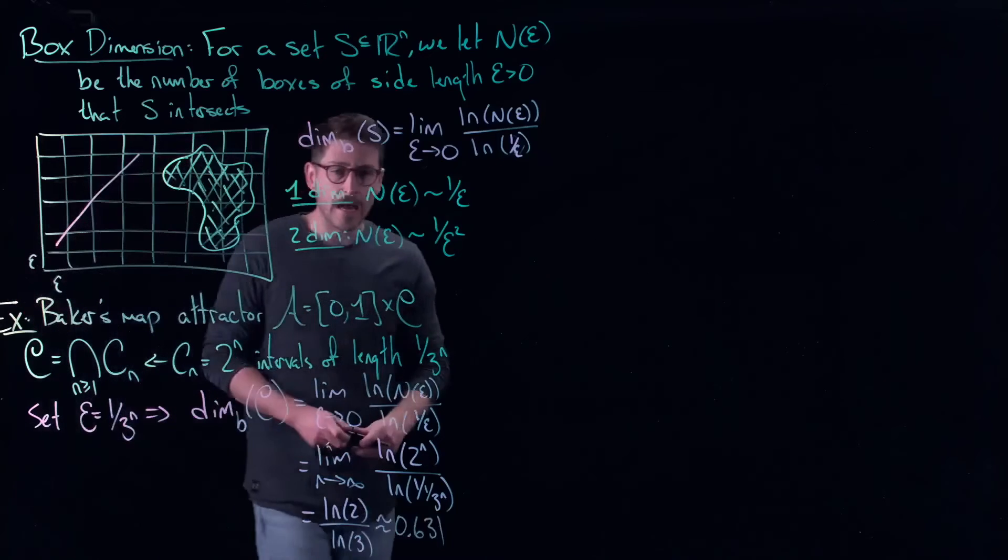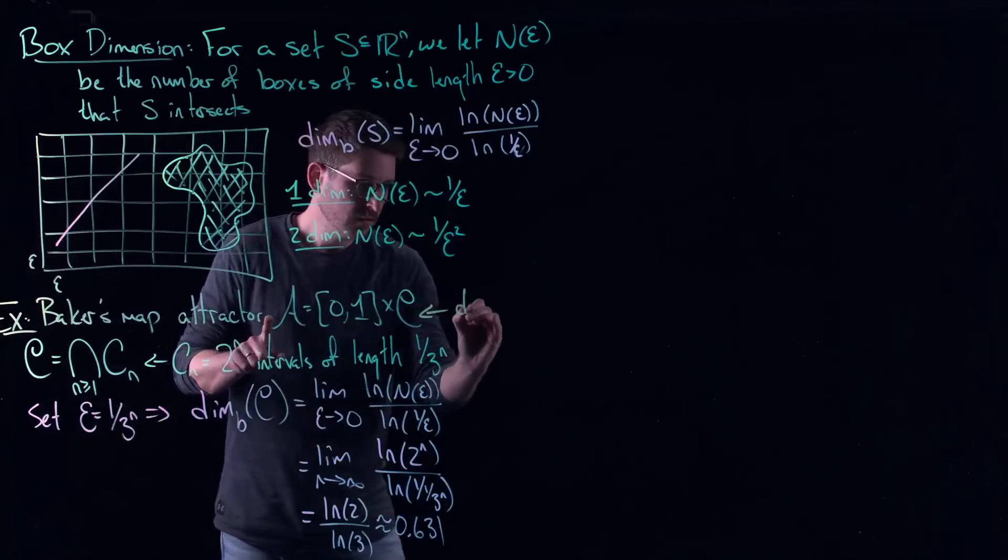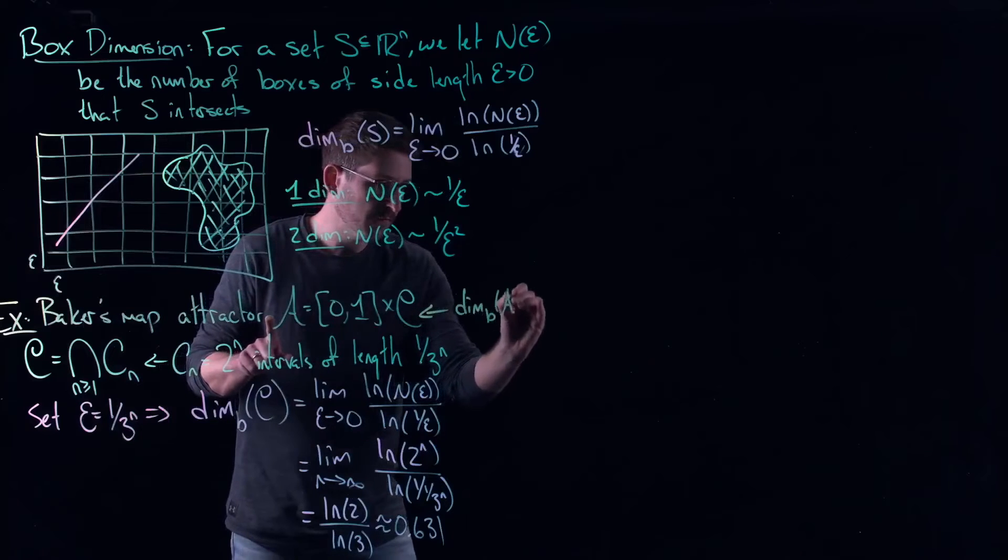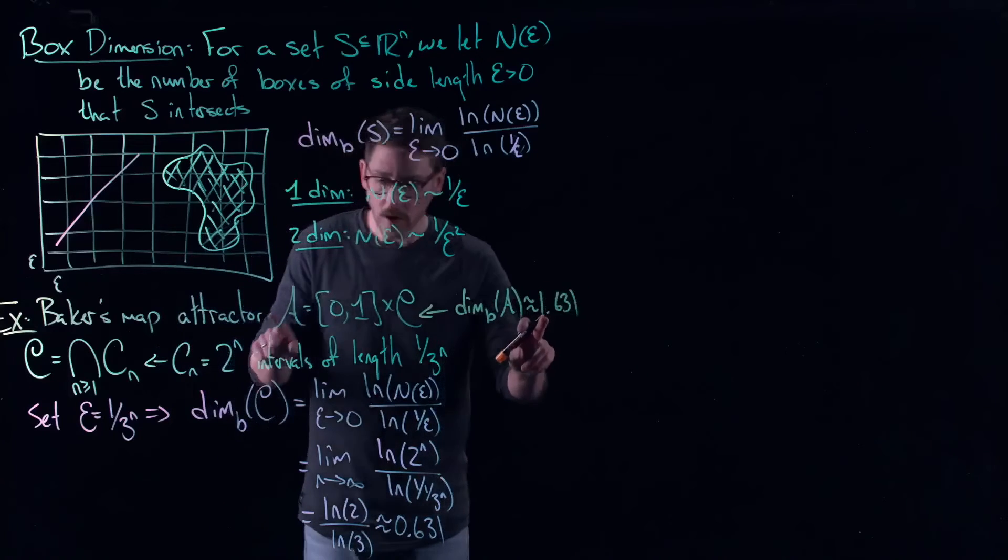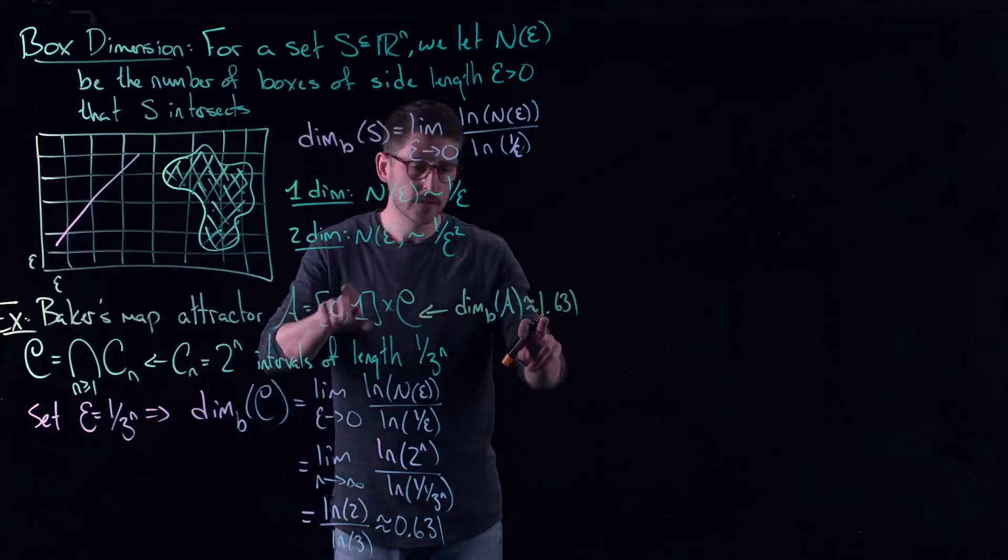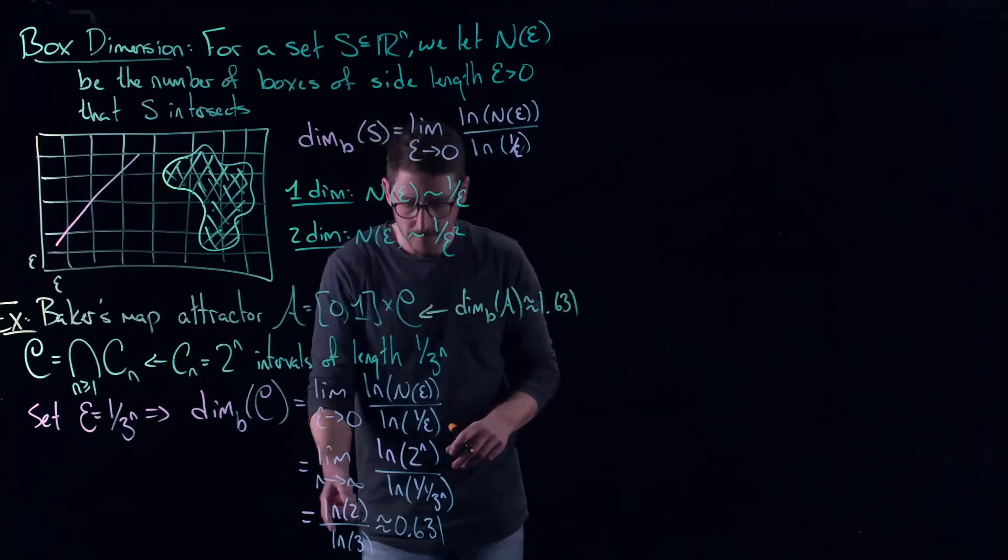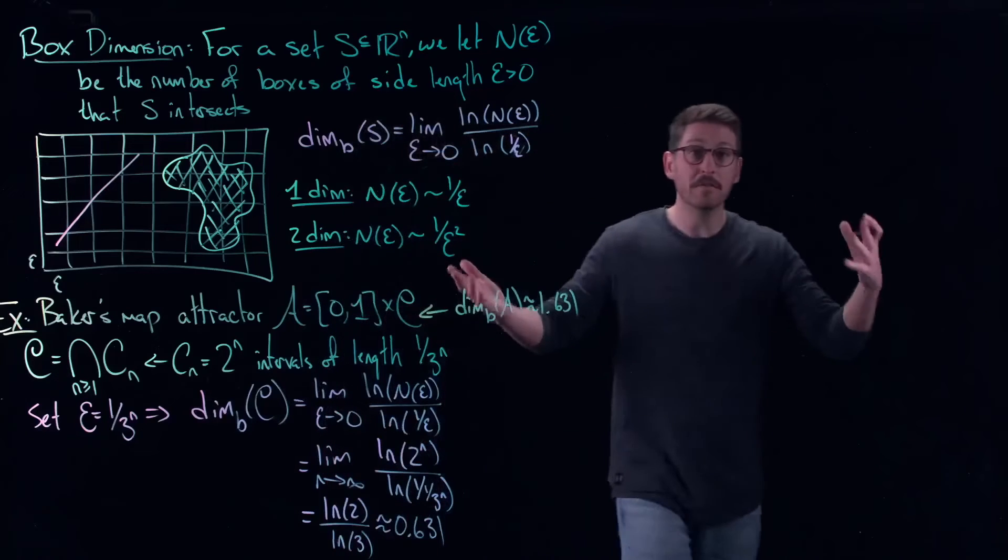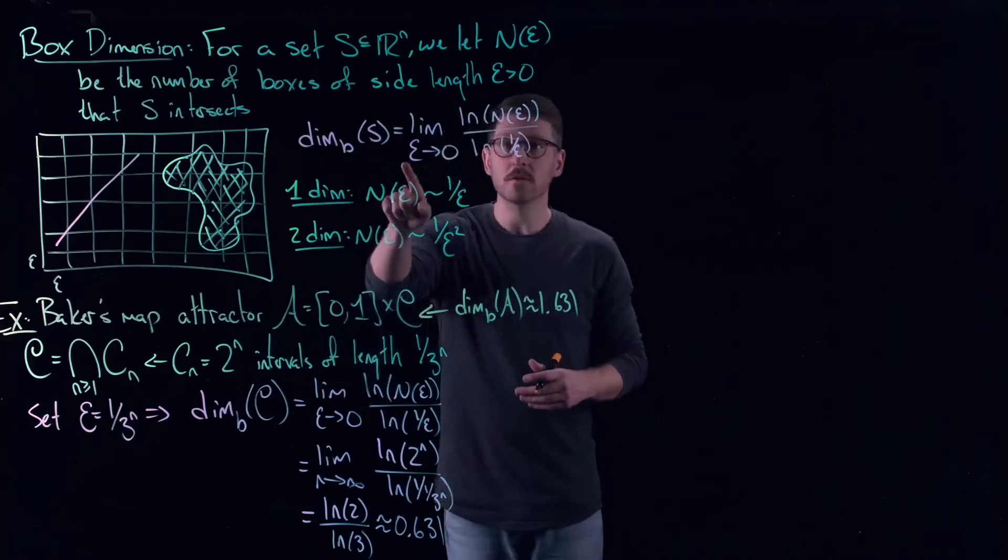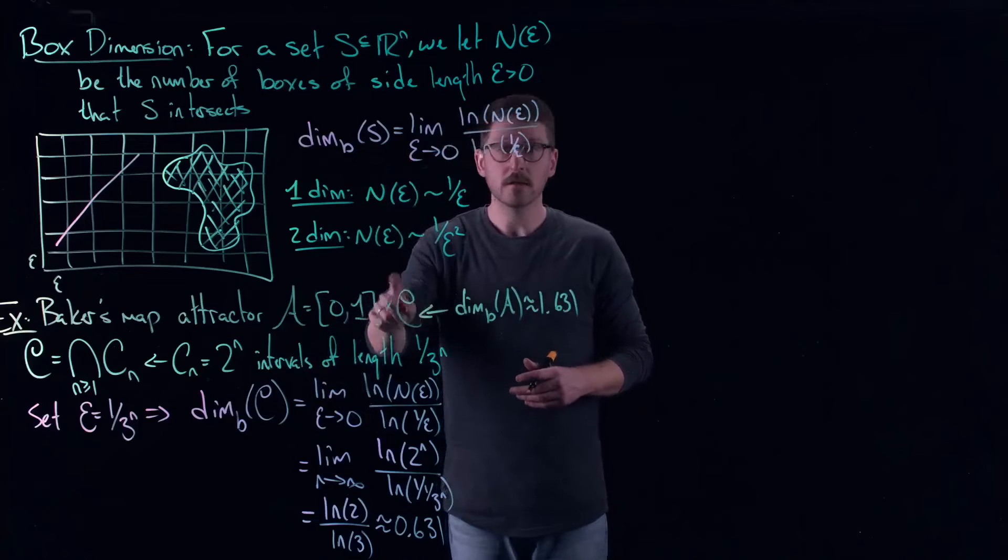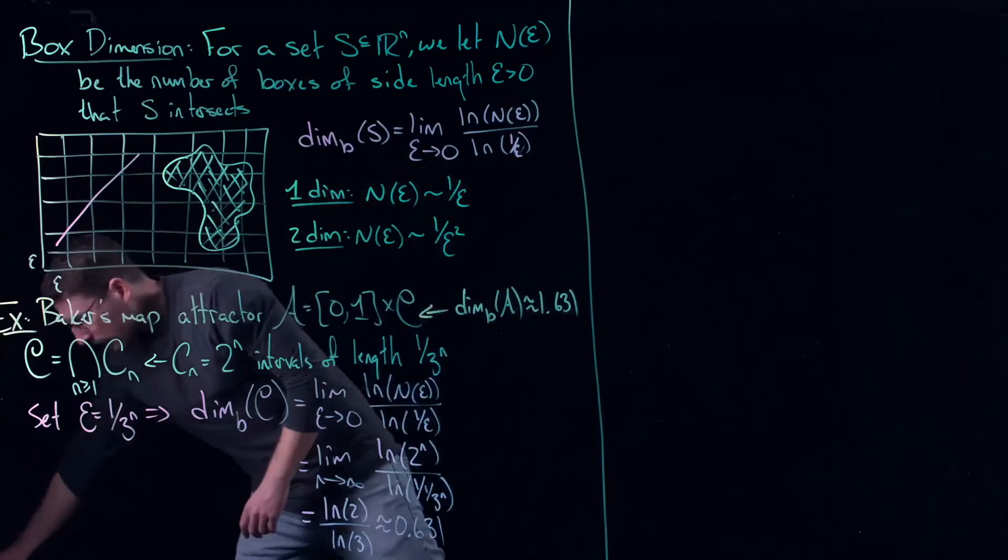So what does that mean? This thing right here, the attractor, the box counting dimension of the attractor for the Baker's Map is about 1.631. One is coming from the one dimension in x, and the 0.631 is coming from the dimension of my Cantor set, ln(2) divided by ln(3). So there it is. We found our first non-integer set. So here, all we did was use the formula for the box counting dimension, and we applied it to this Cantor set that we looked at in the previous video. Let's look at another example here.